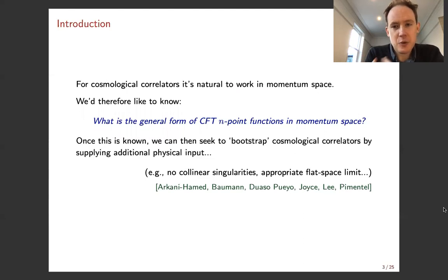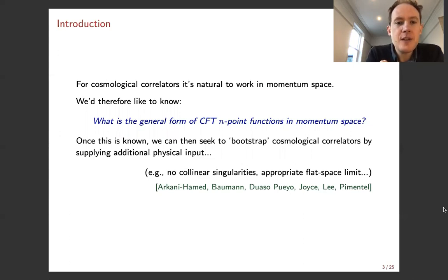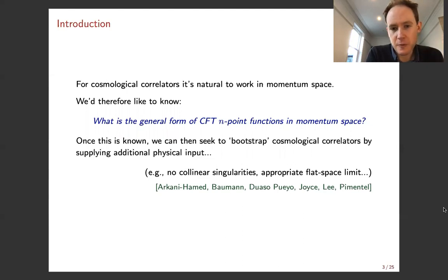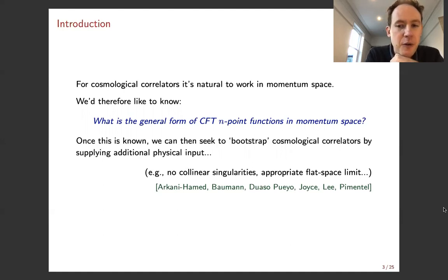From a cosmological perspective it's very natural to work in momentum space. The first question we'd like to understand is: what is the general form of n-point correlation functions in momentum space in the CFT? Surprisingly, despite nearly 50 years of work on CFT, this has until recently been an open question. Once you've answered this, you can bootstrap cosmological correlators by supplying additional physical inputs — this is something explored in recent cosmological bootstrap papers. For example, the Bunch-Davies vacuum corresponds to CFT correlators having no collinear singularities, and you can also look at the flat space limit where they reduce to flat space scattering amplitudes.